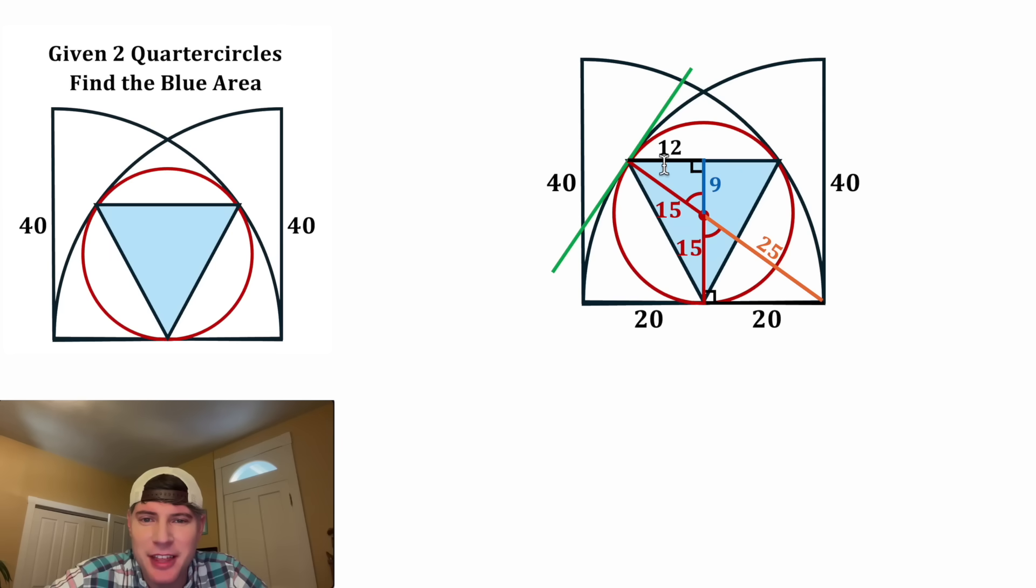And now we can bring back everything else. Since this is all symmetric, and this is equal to 12, this will also be equal to 12. And now we have the base and the height of our blue triangle. So we're ready to find the blue area.